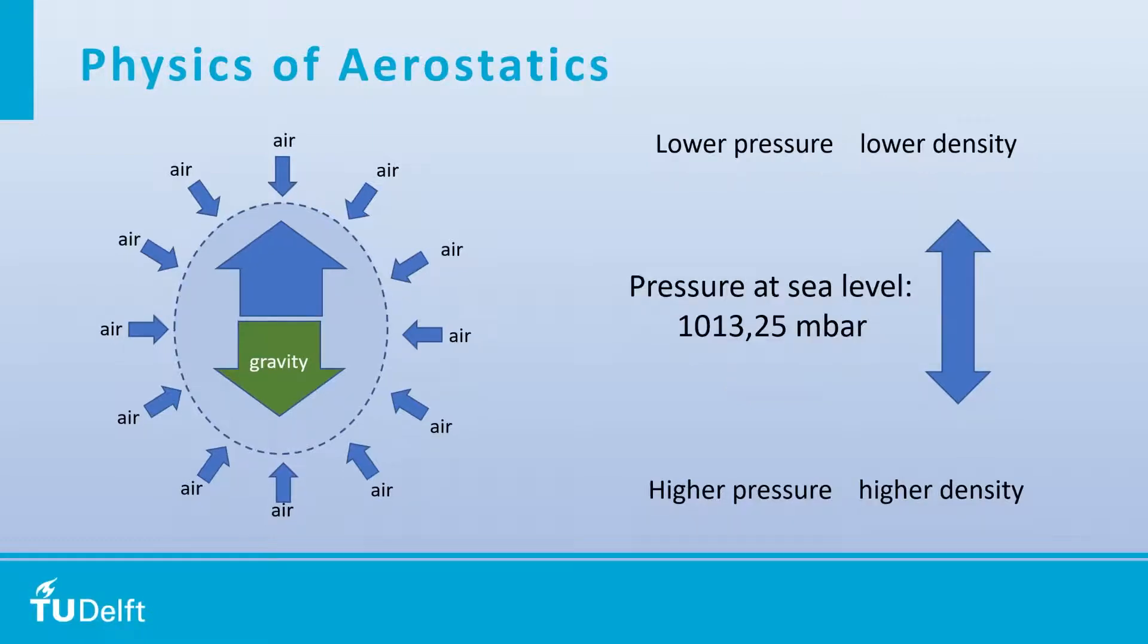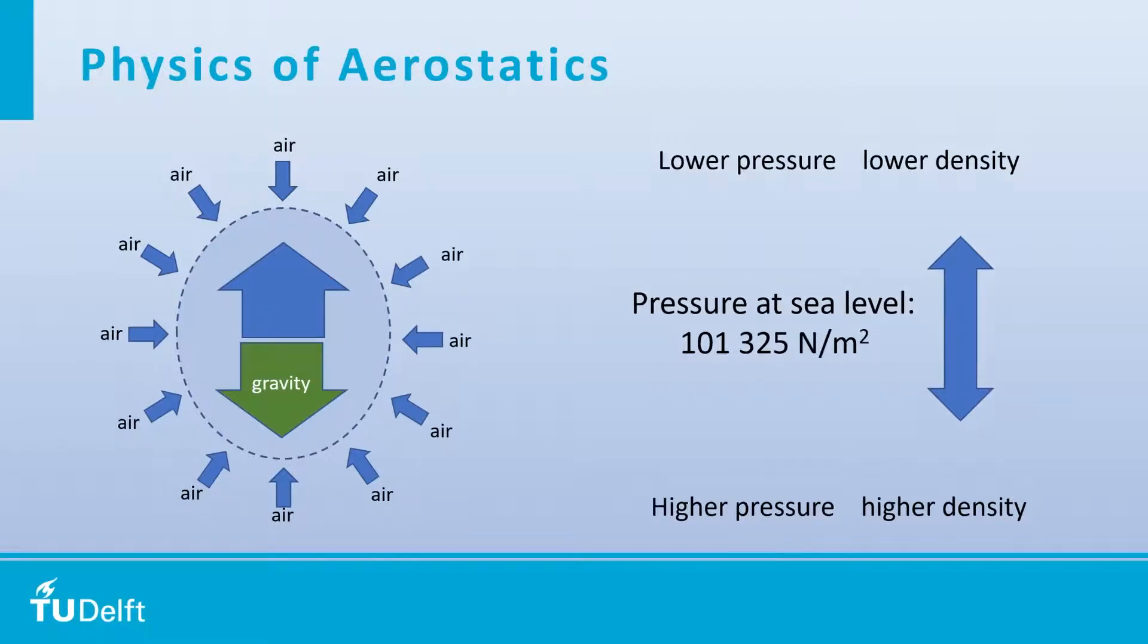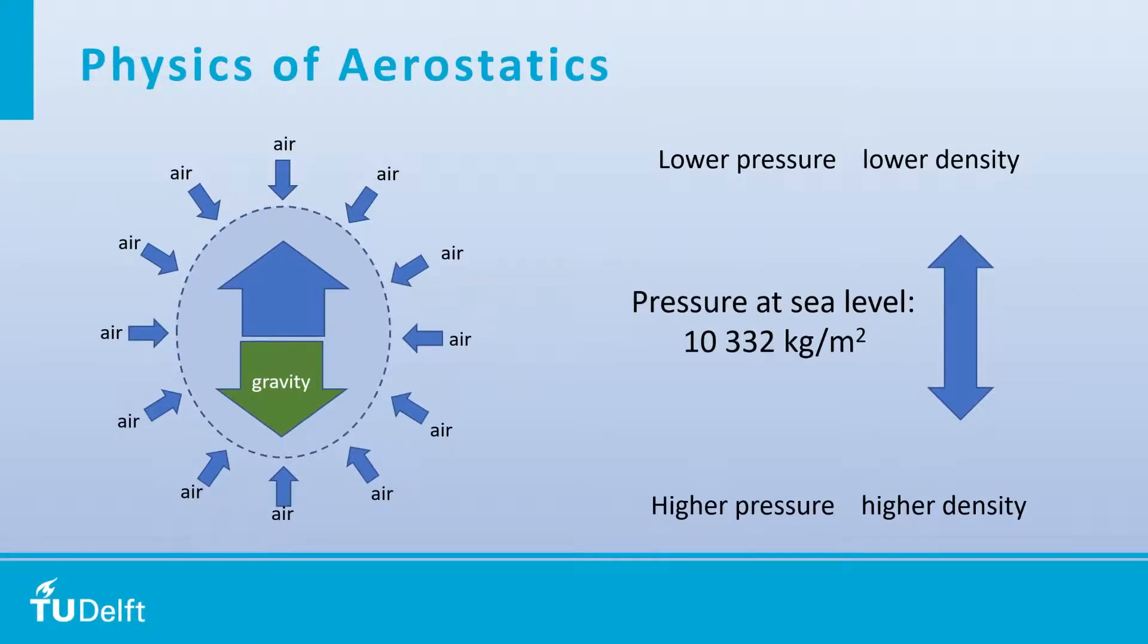If we look at the pressure at sea level, you often hear the number 1,013.25 millibar, maybe. But it also can be mentioned that it's actually 101,000 newton per square meter. Maybe this doesn't mean that much to you yet. But this is actually the same as over 10,000 kilogram per square meter is actually a pressure at sea level. And the reason is that there is indeed over 10,000 kilograms of air above you. So because if we have a table, it presses on it, but it also presses on the lower side, then of course you don't notice this immense pressure. But there is an immense force that allows us to do something with it.